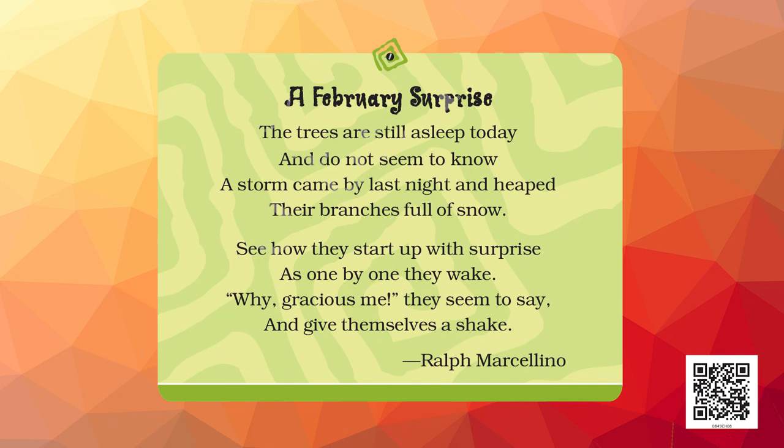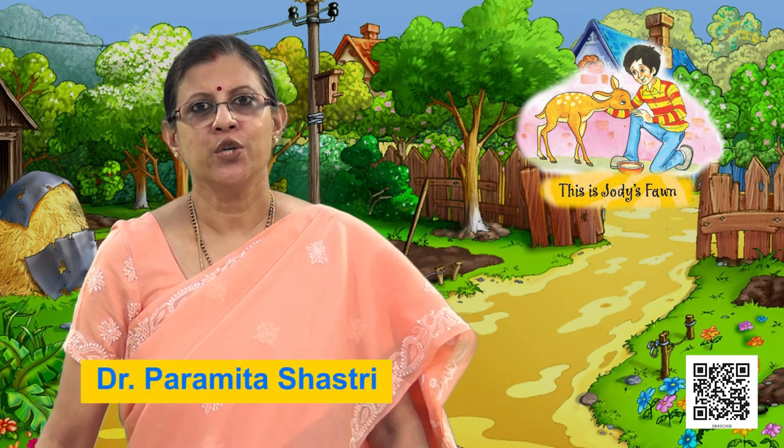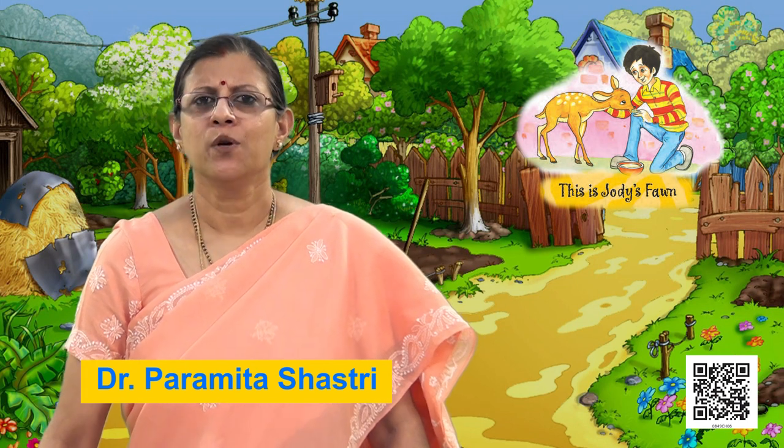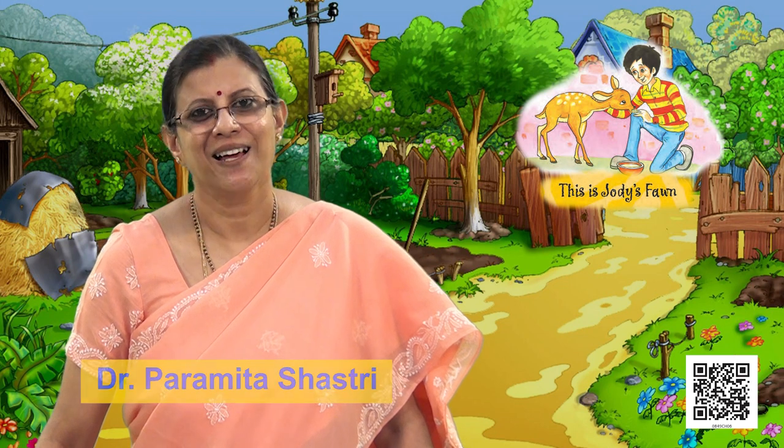With this we come to the end of Unit 6. What all have we learnt? We read the story 'This is Jody's Fawn' and answered comprehension questions. We worked with language connected to the story. Then we read the funny poem 'The Duck and the Kangaroo' and did the exercises after it. Finally, we read the short poem 'A February Surprise.' See you next time when we do some more activities on Unit 6. Thank you, goodbye.